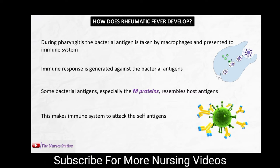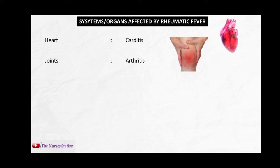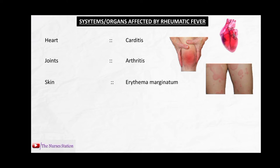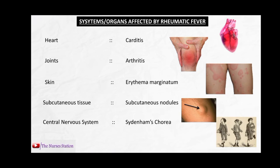Several systems and organs can be affected by rheumatic fever. The heart can be involved, causing inflammation called pancarditis. The synovial joints can be involved, causing inflammation of the synovial membrane termed arthritis. The skin may develop characteristic lesions called erythema marginatum — macules that heal from the center, leaving redness only at the margins. Subcutaneous tissue involvement causes subcutaneous nodules. Central nervous system involvement causes Sydenham's chorea: rapid, irregular, aimless involuntary movements of the arms, legs, trunk, and facial muscles.